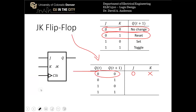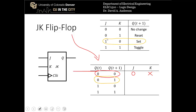For the transition when Q is currently 0 and the next state of Q is 1, there are again two sets of JK inputs: J=1 and K=0 sets the output to 1, or we can toggle the output. Either condition produces that transition, which means J has to be 1 but we don't care what the value of K is.